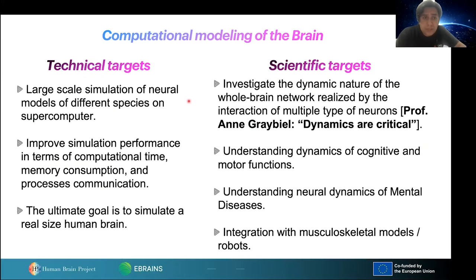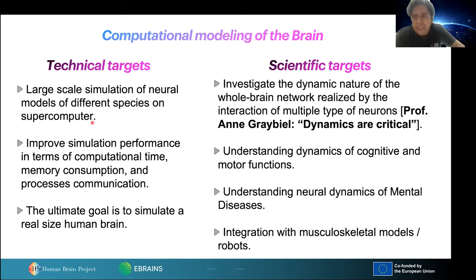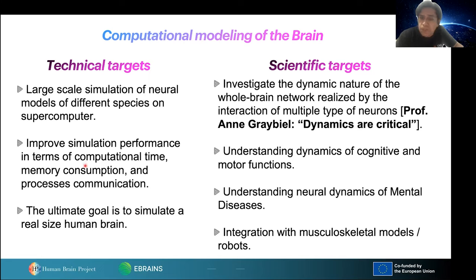First of all, let me comment about our targets in computational modeling. We have technical targets and scientific targets. Technical targets include large-scale simulation for different species on supercomputers — in the case of Japan, we are talking about the Fugaku supercomputer. We also need to improve performance in terms of shorter computational time and lower memory consumption. The ultimate goal is to simulate a real-size human brain.